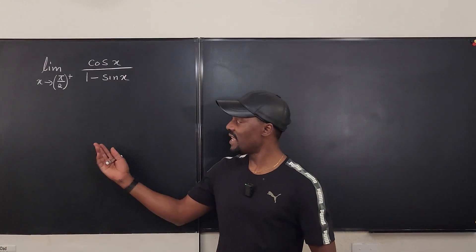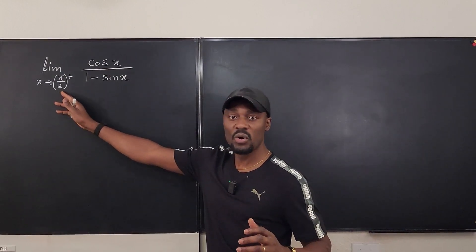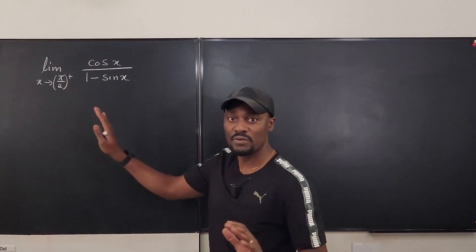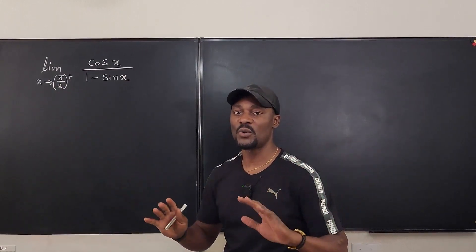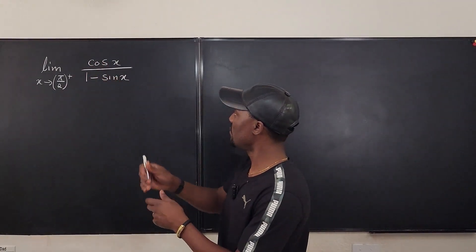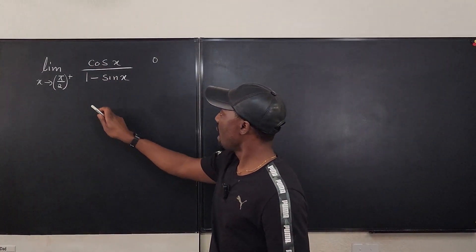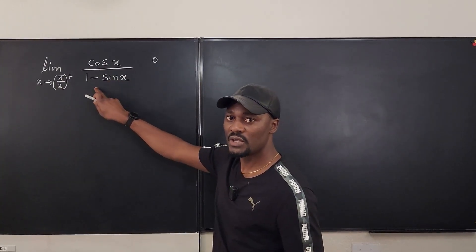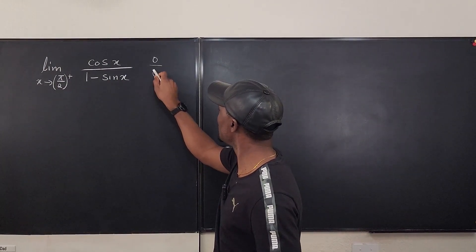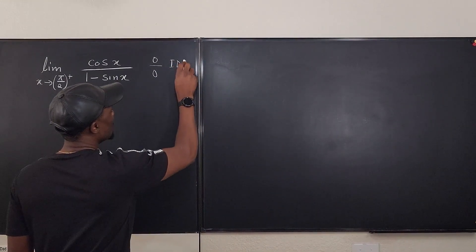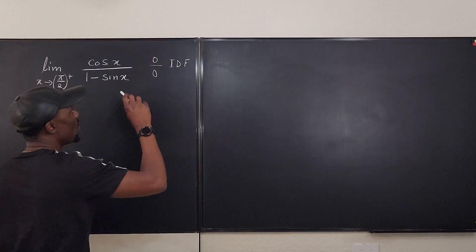Now because this is a finite point, not infinity, the first thing you want to do is plug in pi over 2. Forget about whether it's from the right or left. So if you plug in pi over 2, cosine pi over 2 is 0 and 1 minus sine pi over 2 is 1 minus 1, which gives us 0. So we have a 0 over 0 situation. So this is an indeterminate form. That's what we have, 0 over 0.